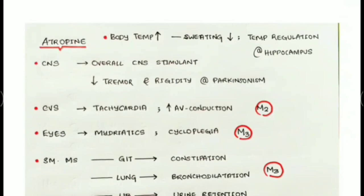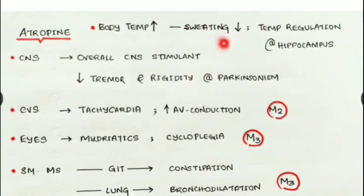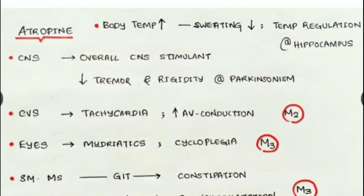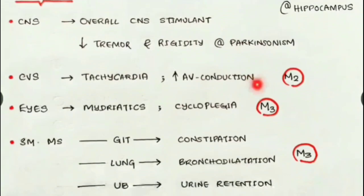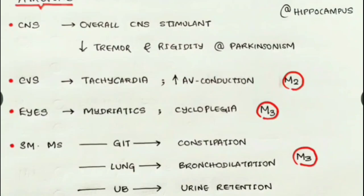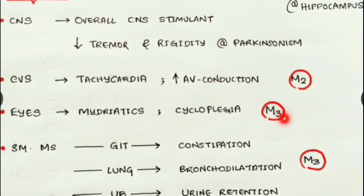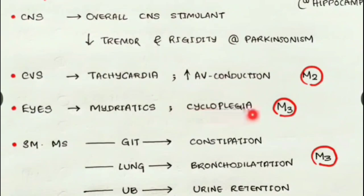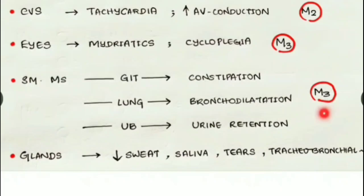Regarding atropine's actions: it increases body temperature by decreasing sweating via inhibitory activity at M3 receptors and also by altering the temperature regulation center at the hippocampus. Atropine is an overall CNS stimulant. It decreases tremor and rigidity in parkinsonism. It causes tachycardia and increased conduction at the atrioventricular node by inhibiting M2 receptors — the opposite of ACh's action. By inhibiting M3 receptors in the eyes, it causes mydriasis and cycloplegia.